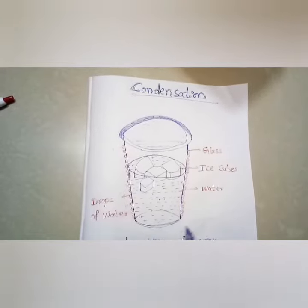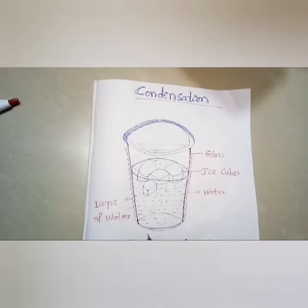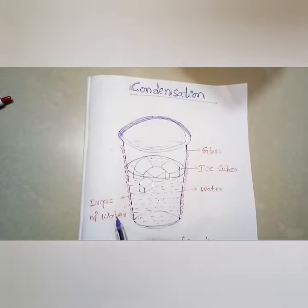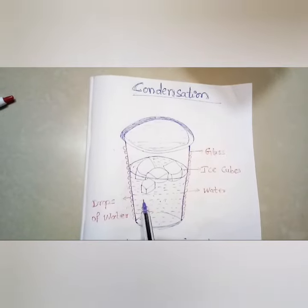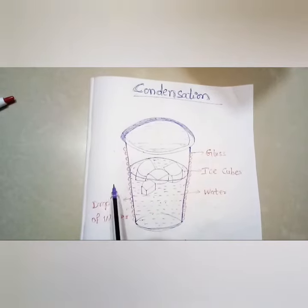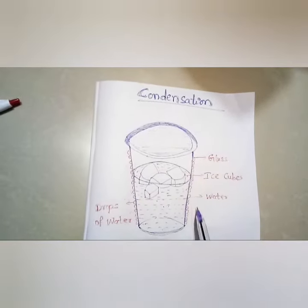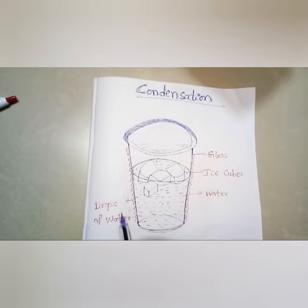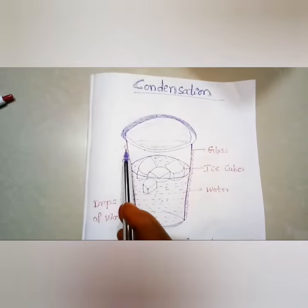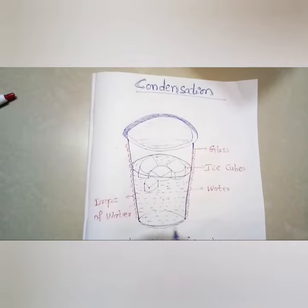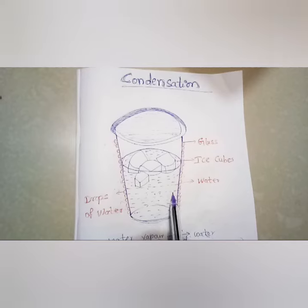Around the glass, the water vapor in the air slowly cools down. That water vapor slowly converts and appears as water on the outer surface of the glass. This process is called condensation.